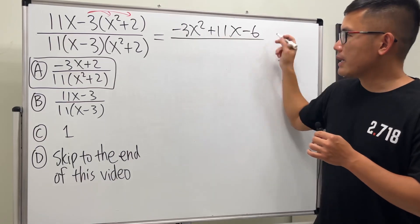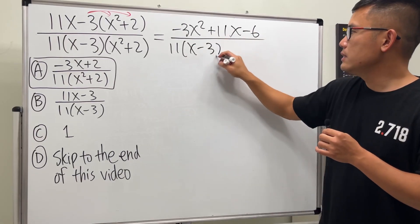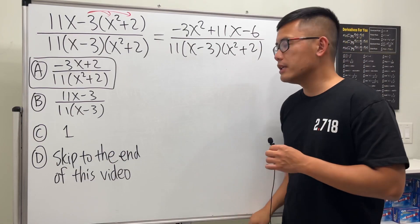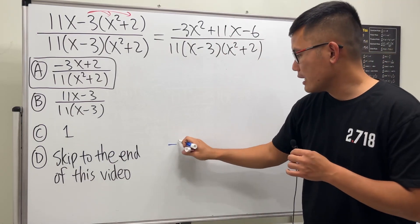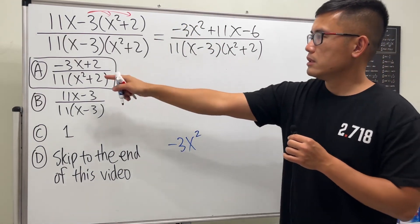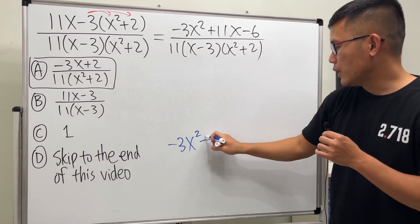All right, and over the bottom which is nicely factored for us already, so we have this. And the top right now is just a quadratic we can factor, so let's go ahead and write that down. If you want to factor our negative first go ahead and do so, but there's no negative at the very front so I'll just keep it as how it is and we'll do the tic-tac-toe factoring right here.